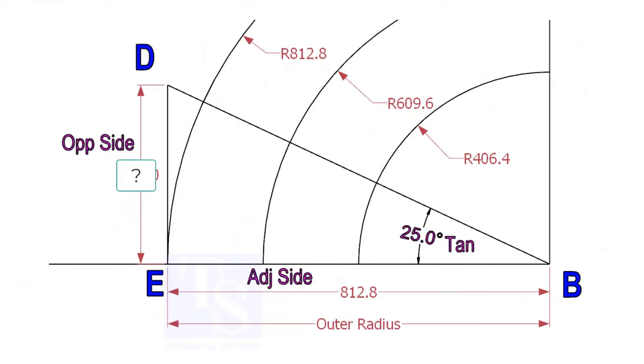Mark a line 25-degree rotated from the base line AB. To draw the line DB, we need to know the length of the line ED.